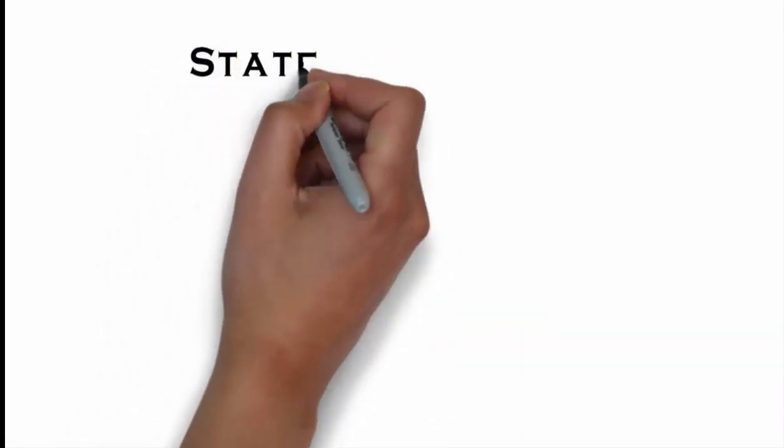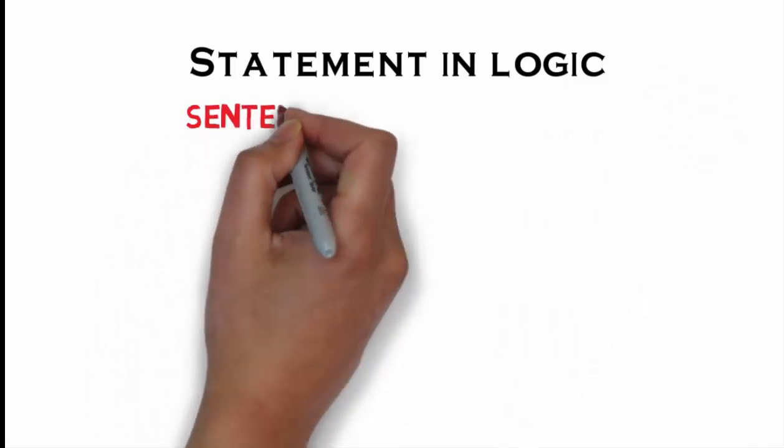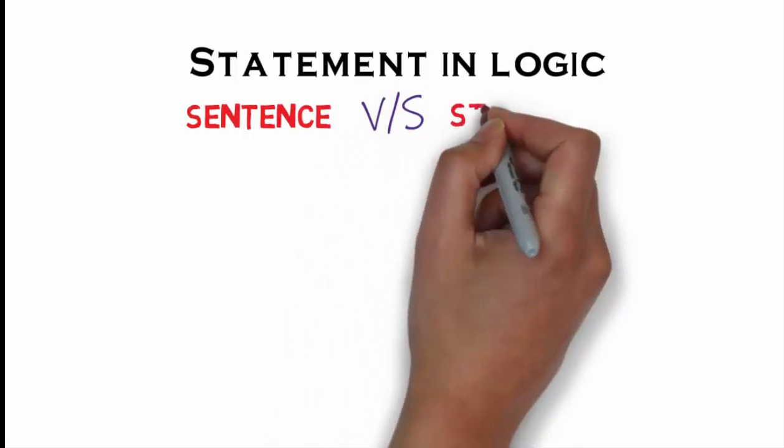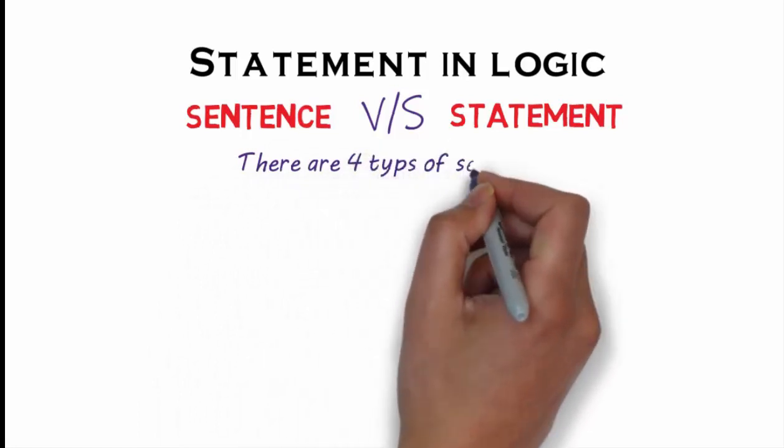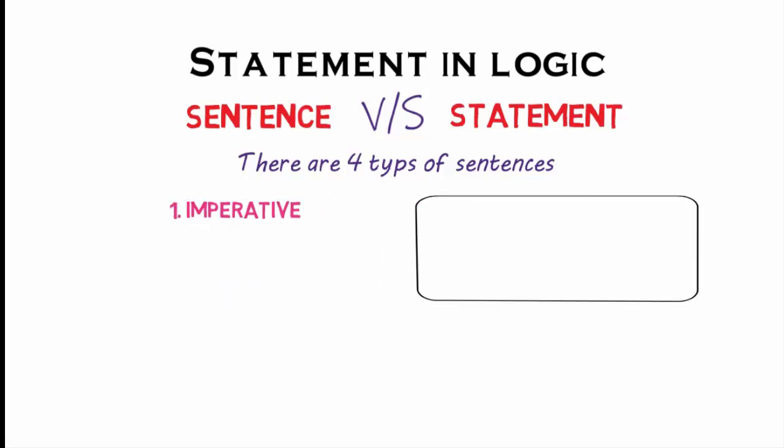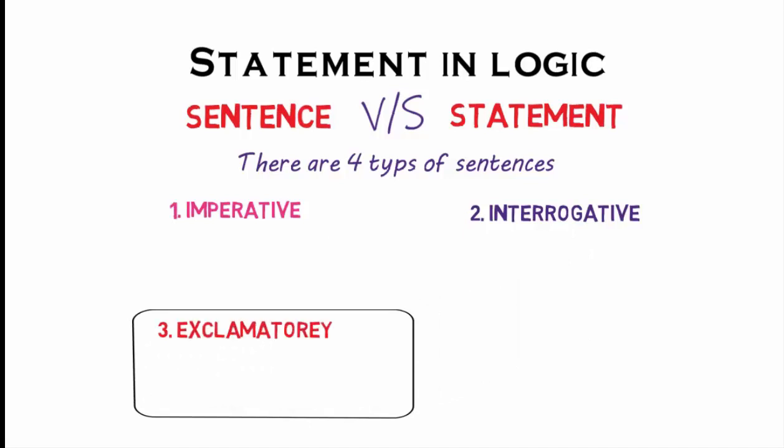Statement in logic. First, we shall see the difference between sentence and statement. A sentence is a group of words having some meaning. There are four types of sentences: imperative, interrogative, exclamatory, and declarative.